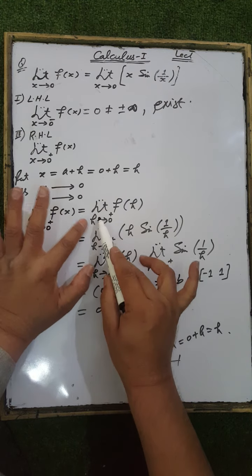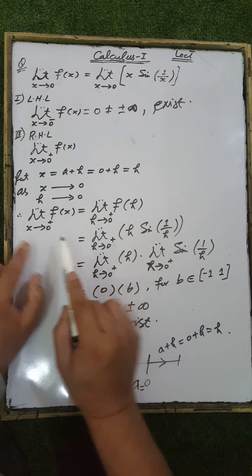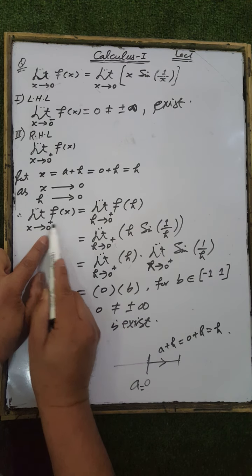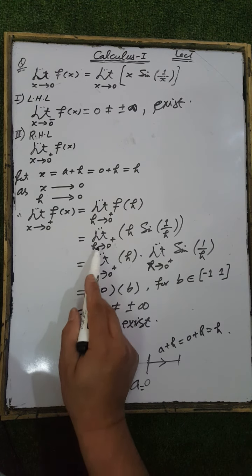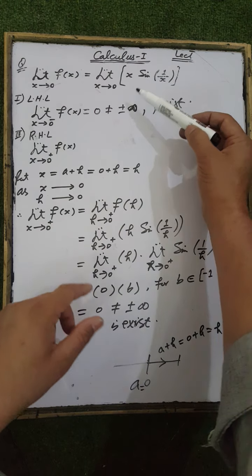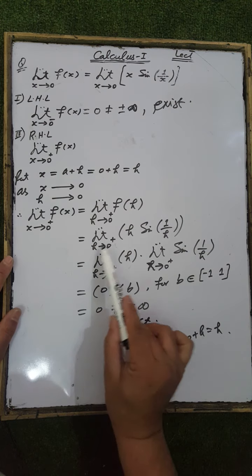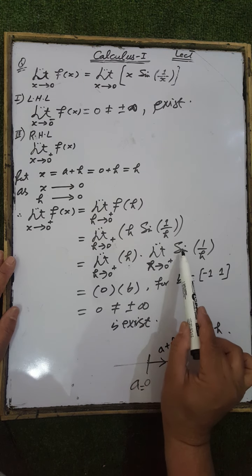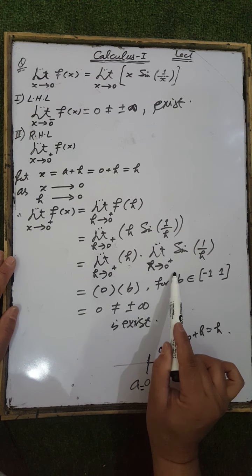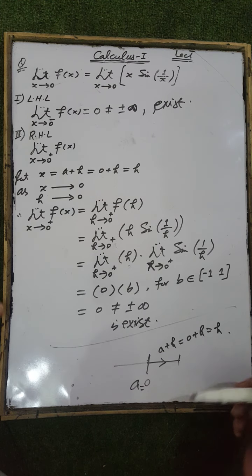The limit of f(x) as x tends to 0 from the positive side equals the limit of f(h) as h tends to 0 through the right side of the neighborhood of a point 0. Replacing x by h gives h·sin(1/h). Apply the limit to h as well as to sin(1/h): limit as h tends to 0 of h, multiplied by limit as h tends to 0 of sin(1/h).